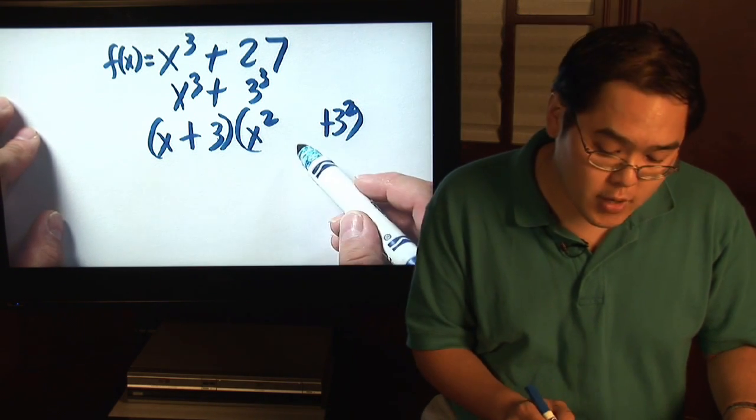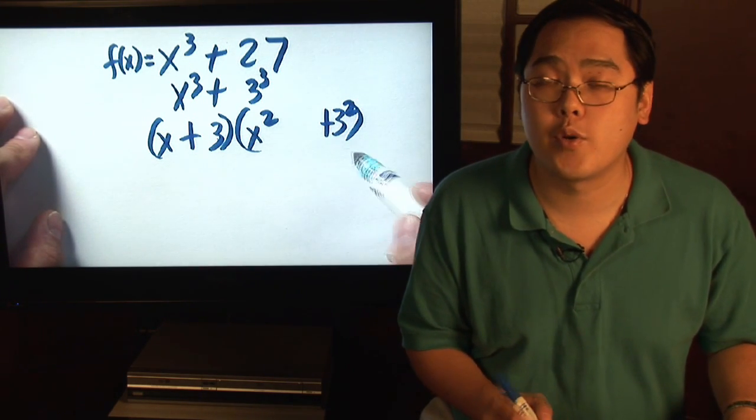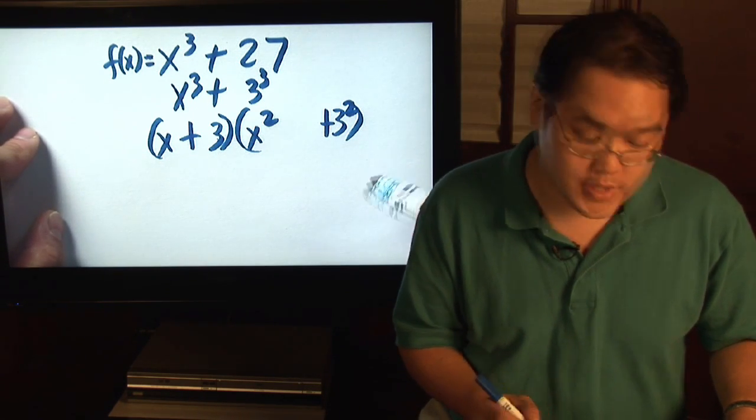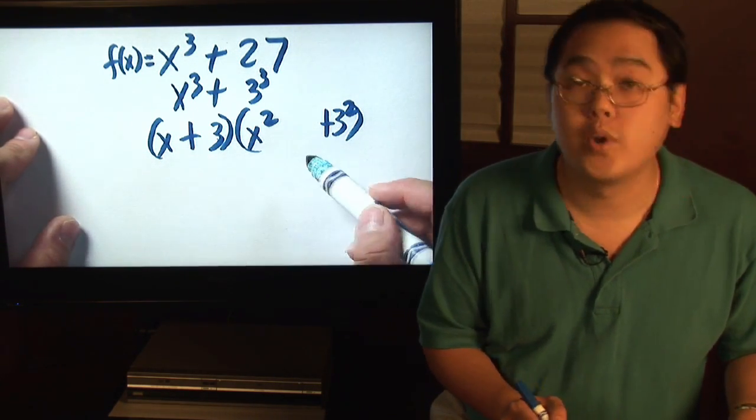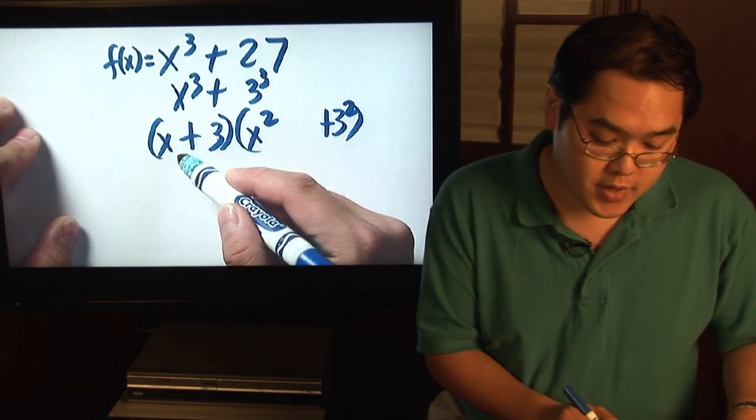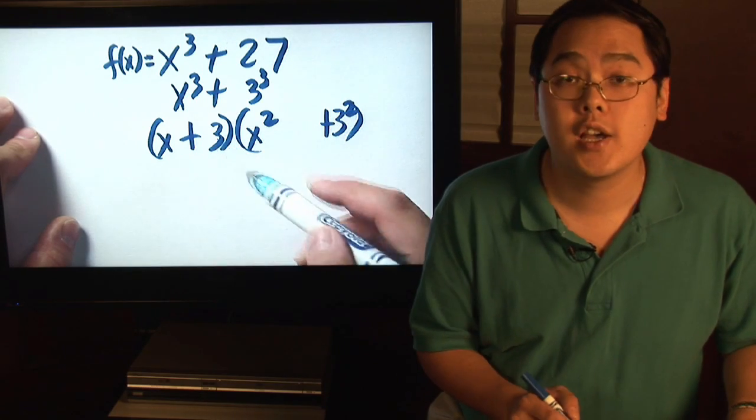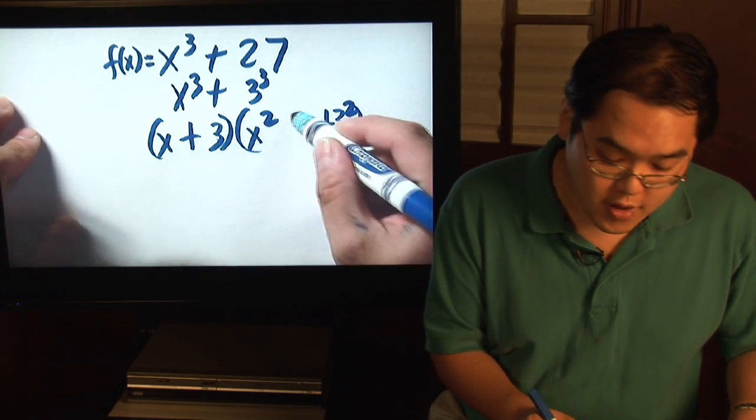Now you may have noticed that I left a gap on purpose for the larger parentheses. Well that's because the larger parentheses will always have three terms. Now, what is that third term going to be? Well, the third term is when you multiply the x and the 3, which is going to be 3x.